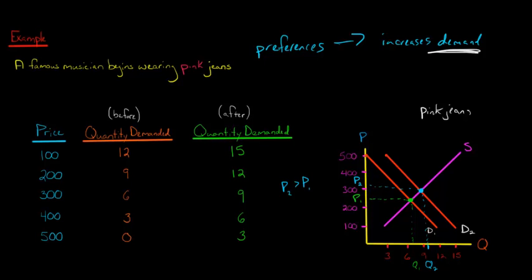So now what you see is that P2 is greater than P1. What does that mean? That means the price of the pink jeans has gone up. And now again, we're talking about the relative price, it might not be the actual, relative to the average price of other goods and services, pink jeans have become more expensive.